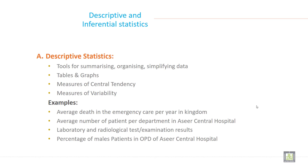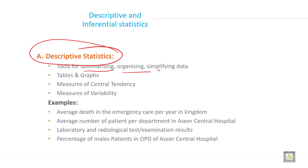Broadly, statistics is divided into two categories. The first one is called descriptive statistics. Descriptive statistics is a tool for summarizing, organizing and simplifying data. It uses tables and graphs, and it measures central tendency and variability.